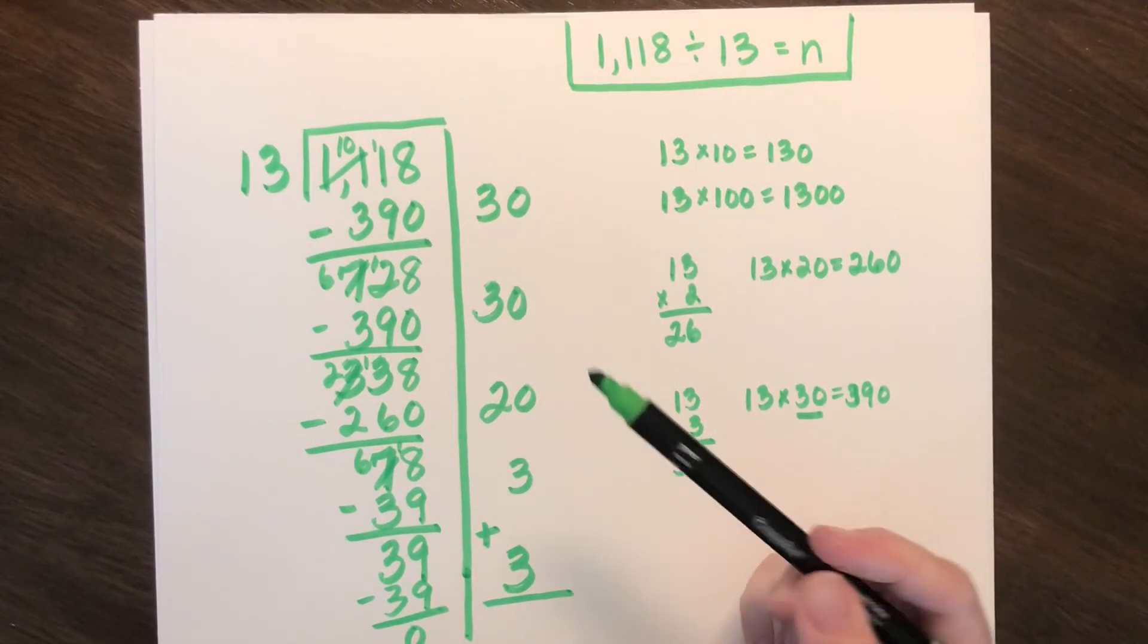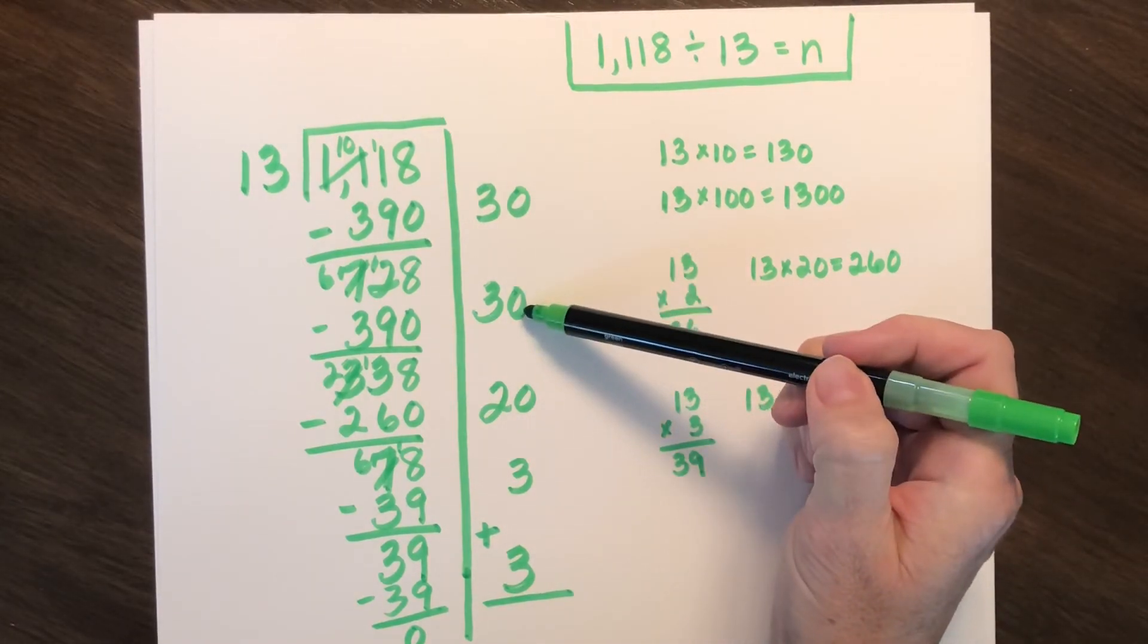So how many would be in each group? I take my partial quotients, just as I've been doing, and I want to sum, create a, determine the sum.